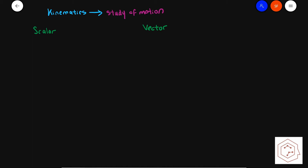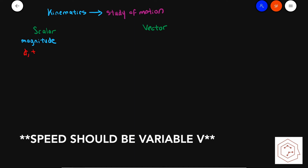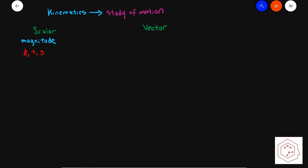Scalars are things that only have a magnitude, and this includes measurements like distance, time, and speed. On the other hand, a vector has both a magnitude and a direction, and this includes measurements like velocity, position, displacement, and acceleration.